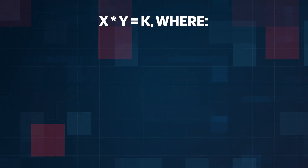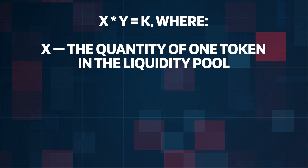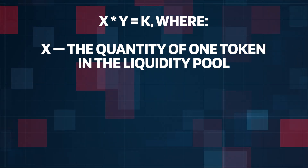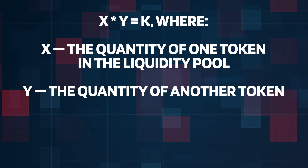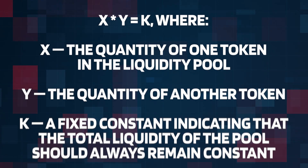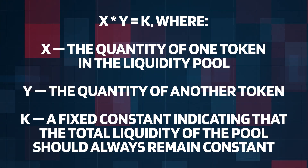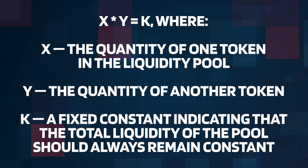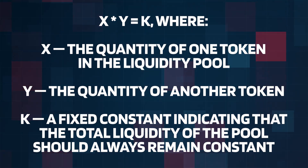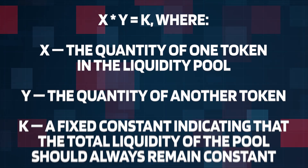Uniswap uses the formula X × Y = K, where X is the quantity of one token in the liquidity pool, Y is the quantity of another token, and K is a fixed constant indicating that the total liquidity of the pool should always remain constant. Thus, regardless of the current value of the two assets, their product should remain unchanged.